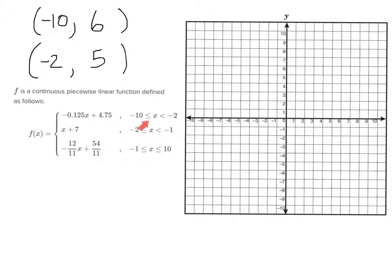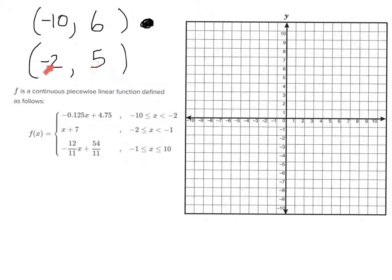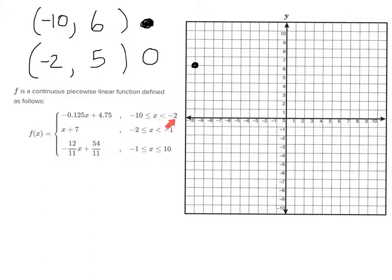Now, negative 10 is next to an equal sign, so that point is going to be a closed circle. But negative 2 is next to a less-than-but-not-equal sign, so the point it corresponds to is going to be an open circle. So I go to negative 10, 6 — that's left 10 and up 6 — and I put a closed point. Then I go to negative 2, 5 and put an open circle.